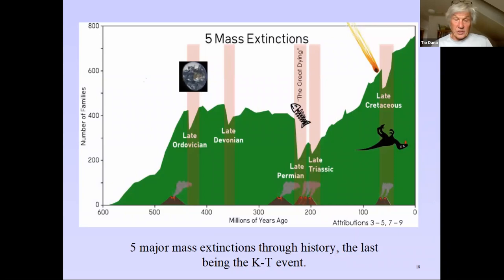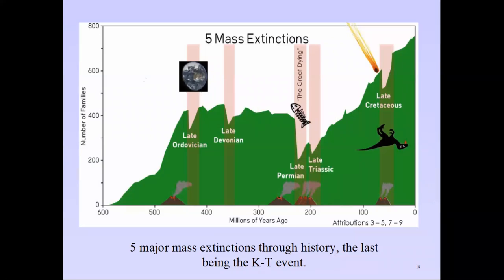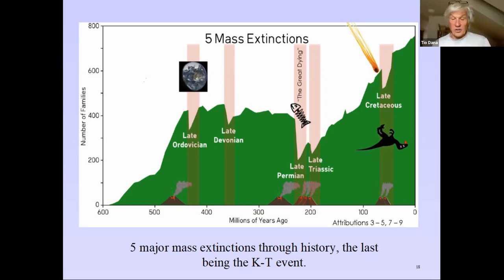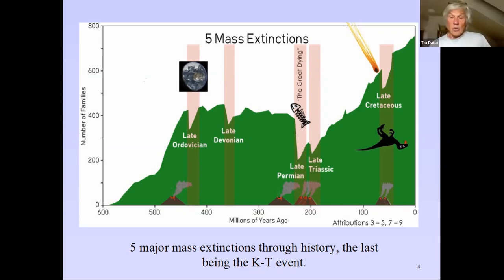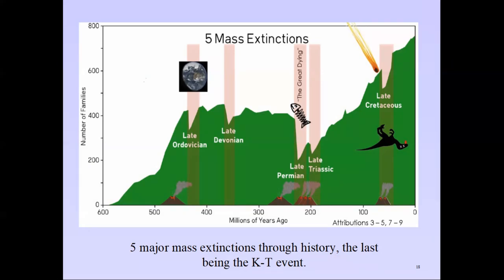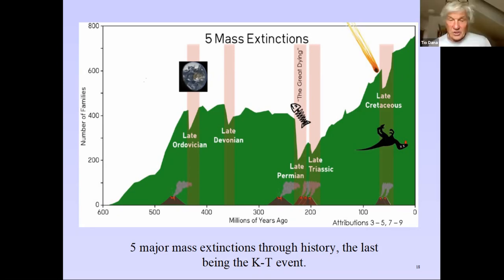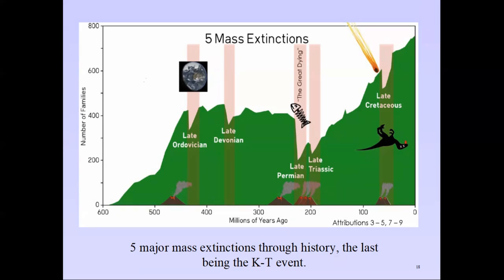These are mass extinctions shown over time. The last one on the right is the Late Cretaceous asteroid strike, but there are four others. The worst one, in the middle, is the Permian extinction — 90% of all life on the planet went extinct. The other side of the picture shows in green the increase in the diversity of life over time. There is far more life on the planet now than there has ever been. In spite of tremendous adversity, life has increased over time.